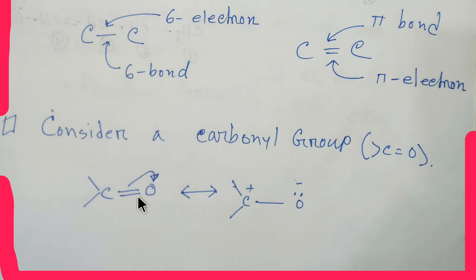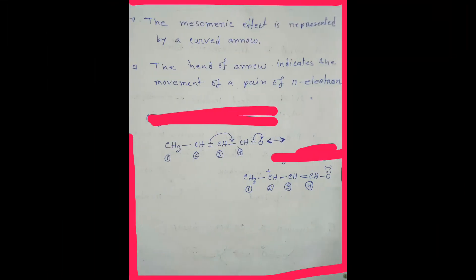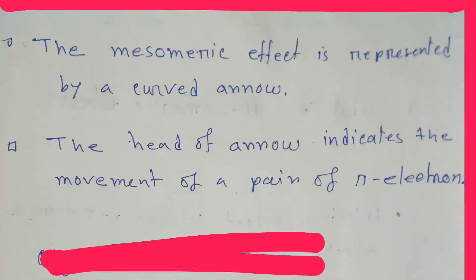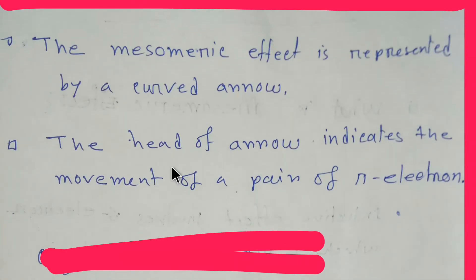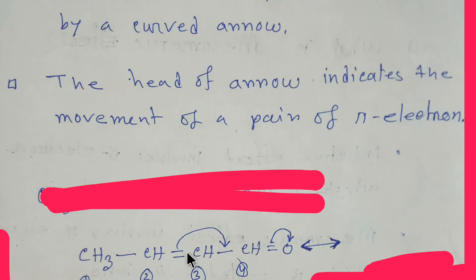The mesomeric effect is represented by a curved arrow. The head of the arrow indicates the movement of a pair of pi electrons.